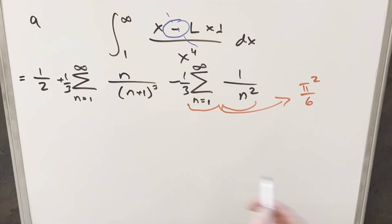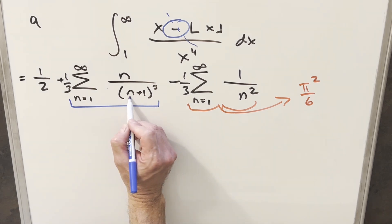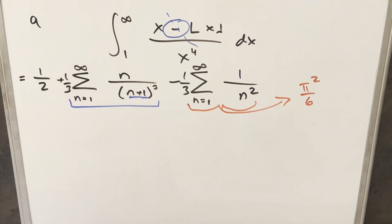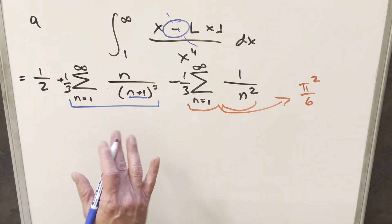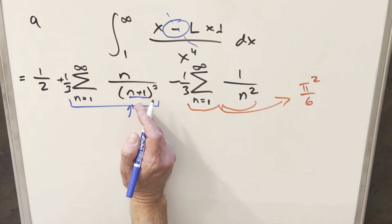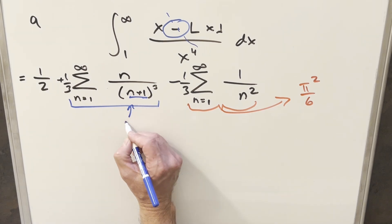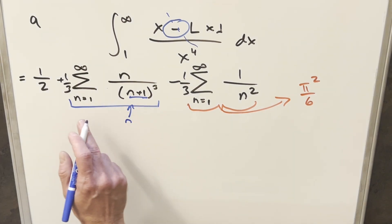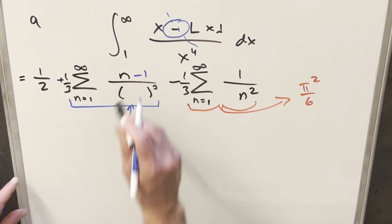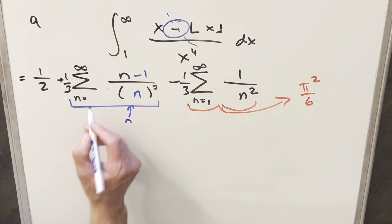All we need to do now is focus on the middle piece. I want to do an index change because I don't want n plus one in the numerator — I want to simplify it to just n. This works exactly like a u-substitution on a definite integral. I subtract one from everything in the expression, turning n plus one into n, but I also have to add one to the starting index. So n minus one cubed becomes n cubed, and the index changes from one to two.